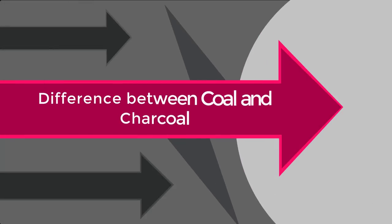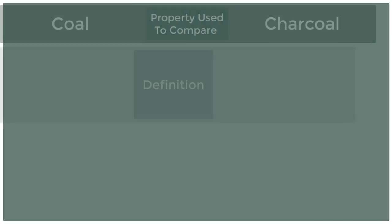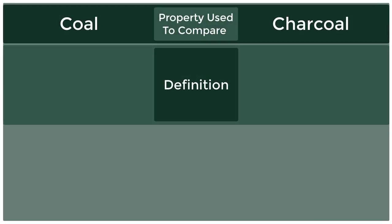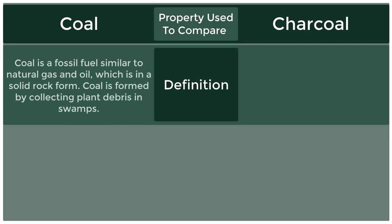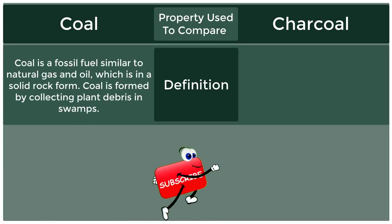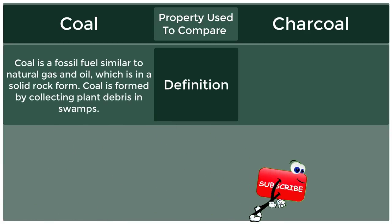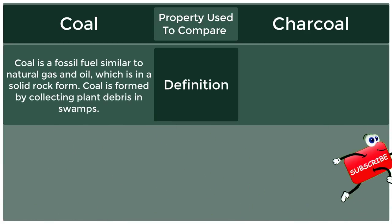Difference between coal and charcoal. Definition of coal: coal is a fossil fuel similar to natural gas and oil, which is in a solid rock form.